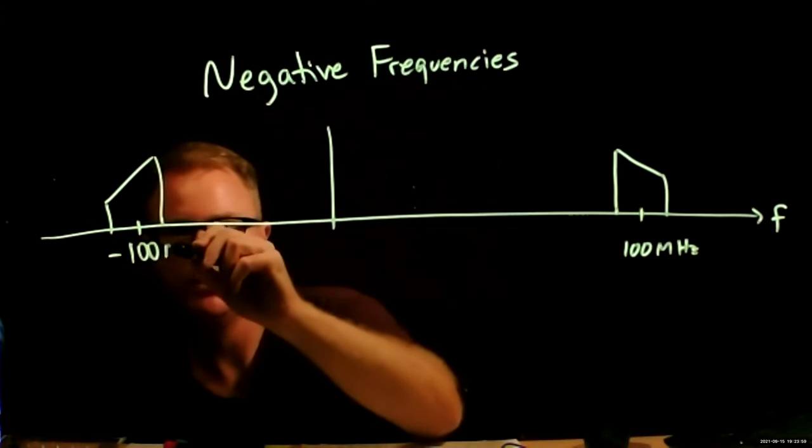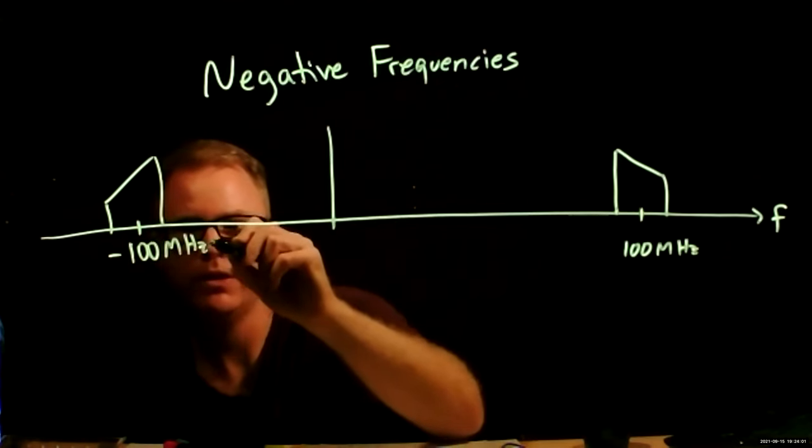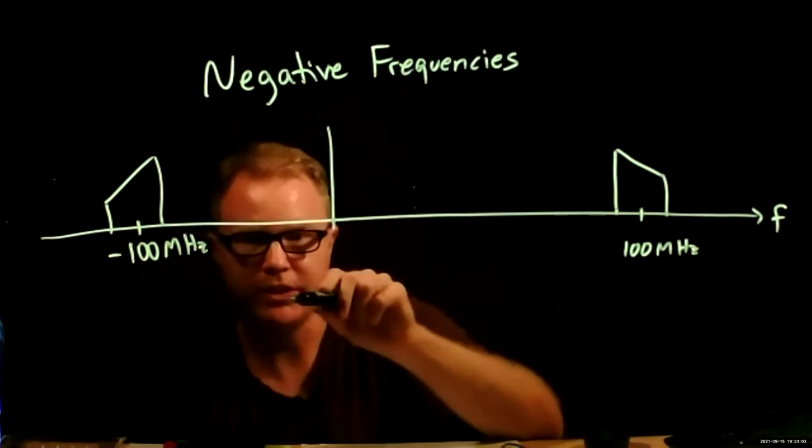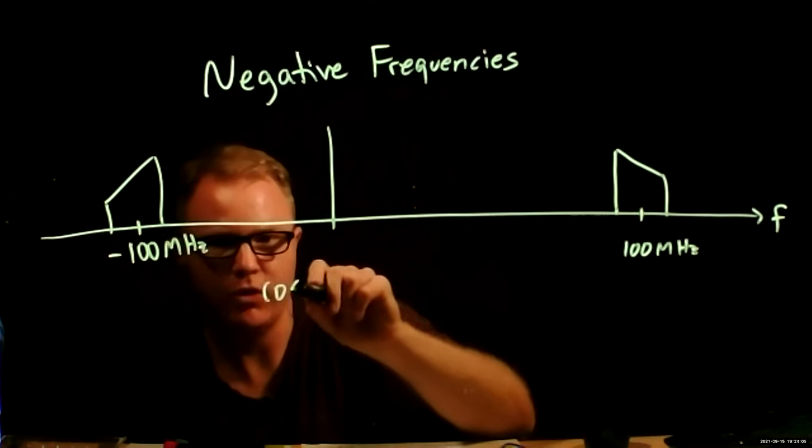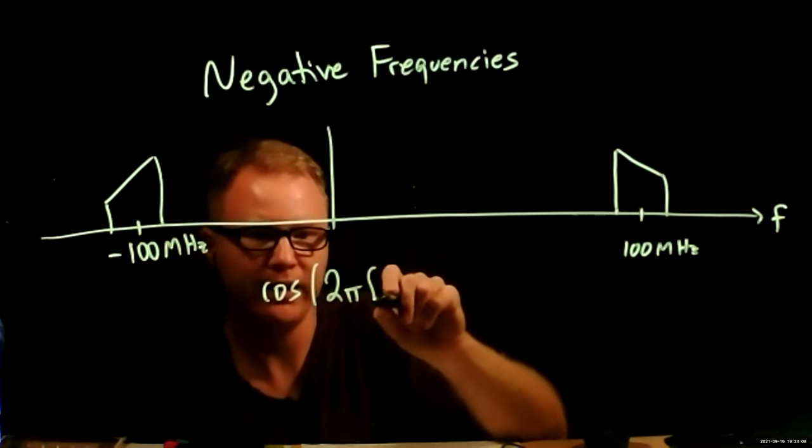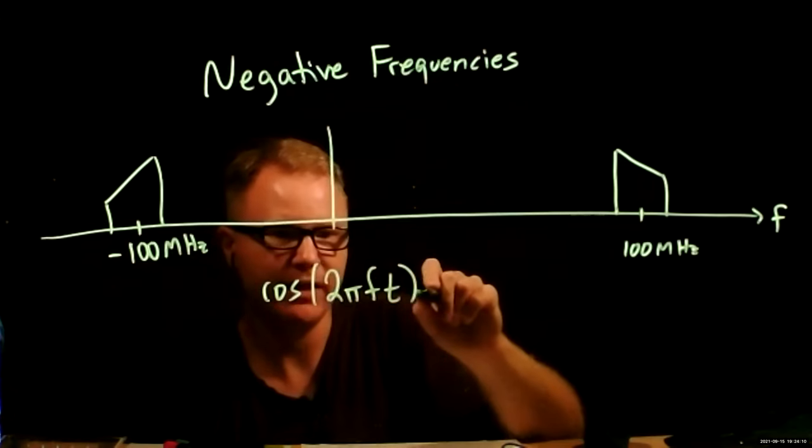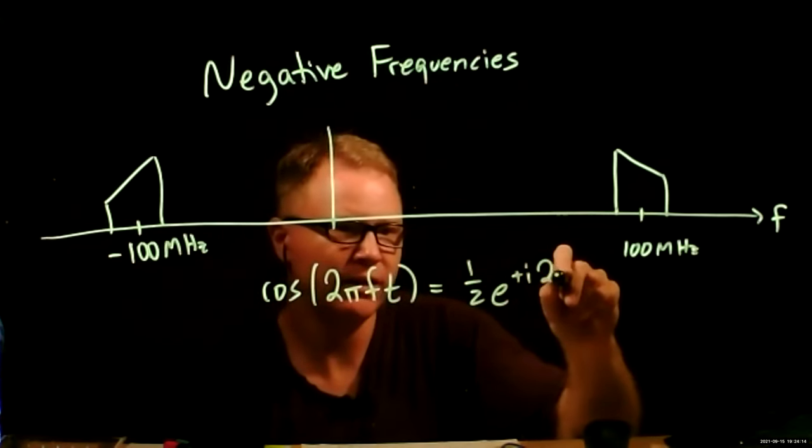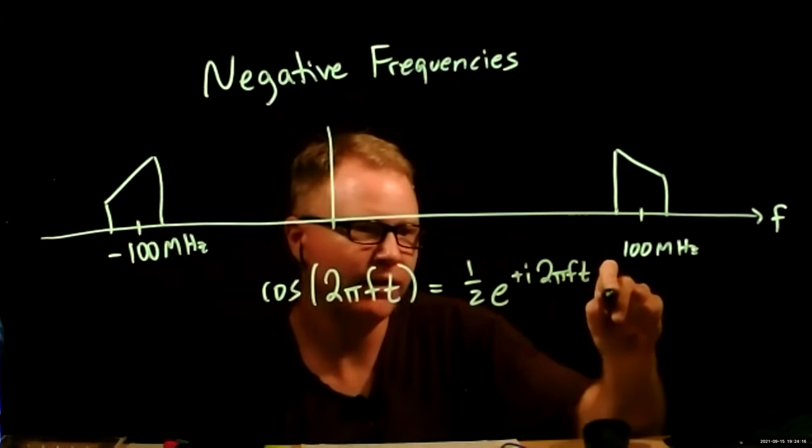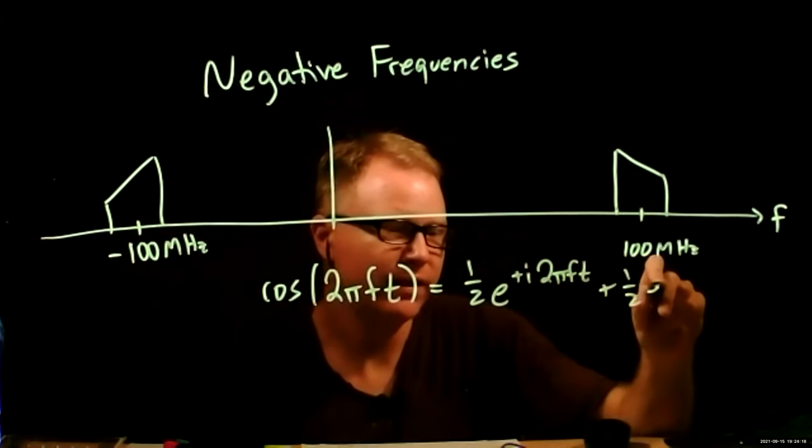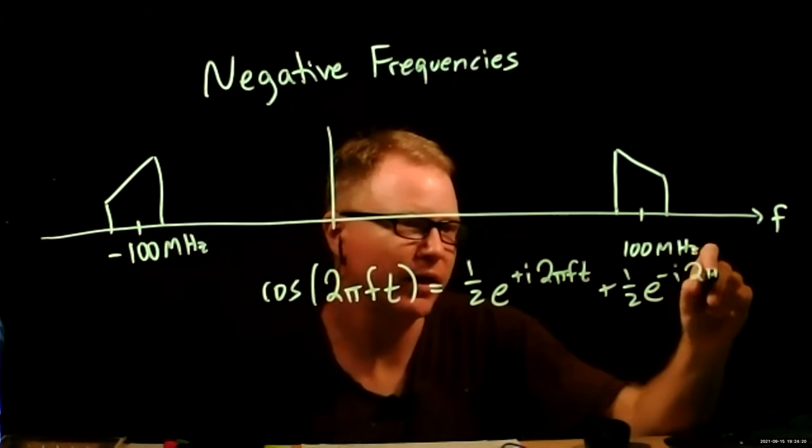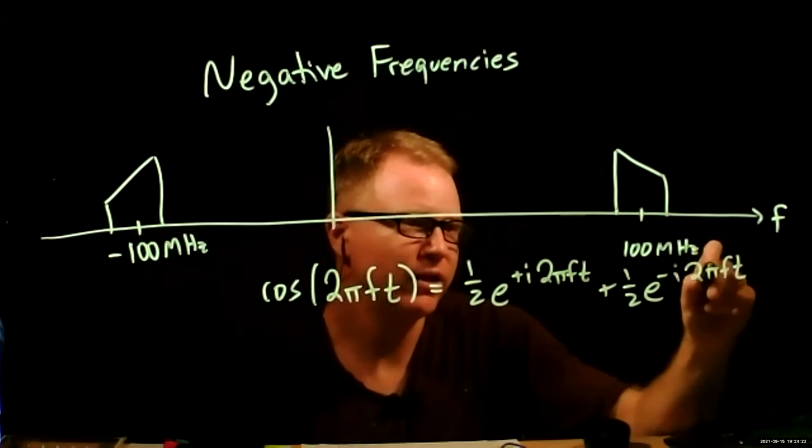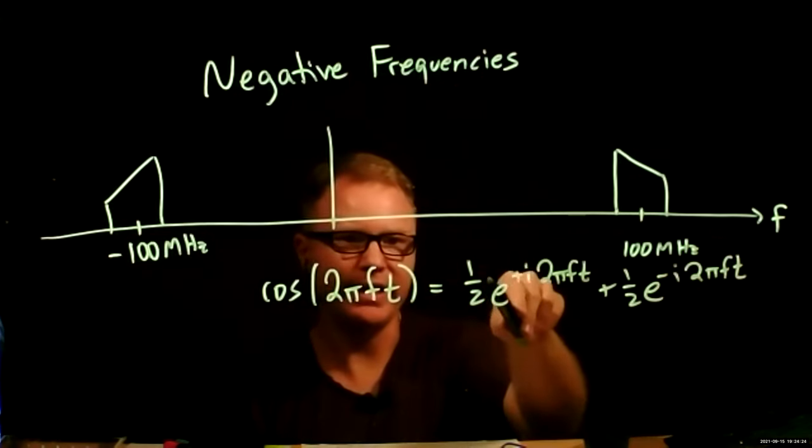minus 100 megahertz, and this is just because of the fact that, you know, cosine of 2 pi f t is equal amounts e to the plus i 2 pi f t and e to the minus i 2 pi f t.